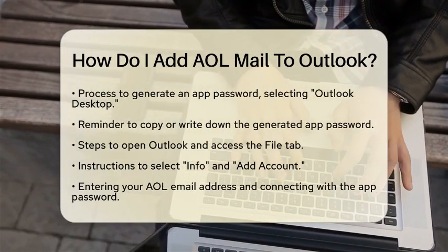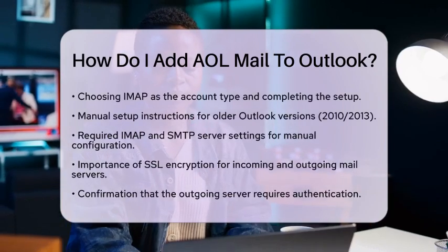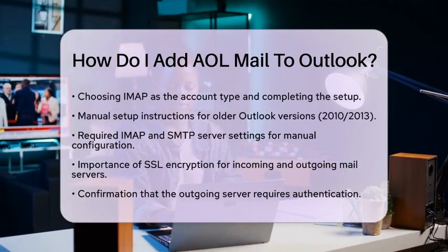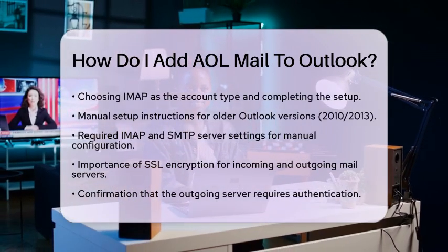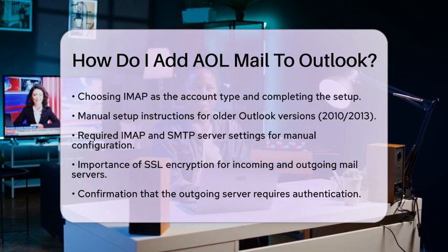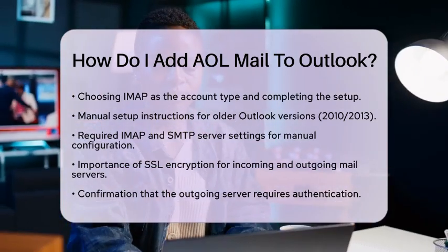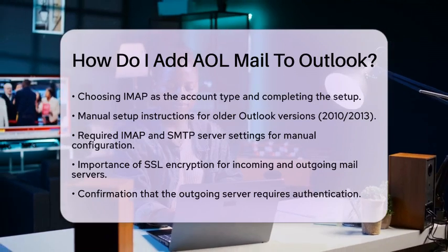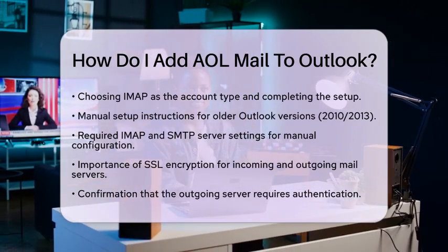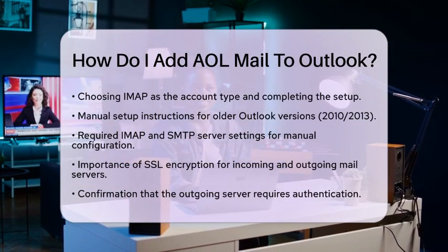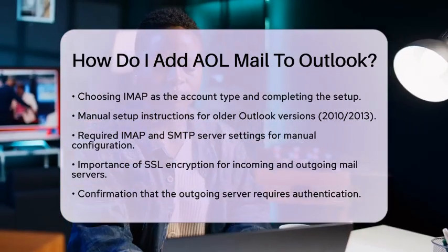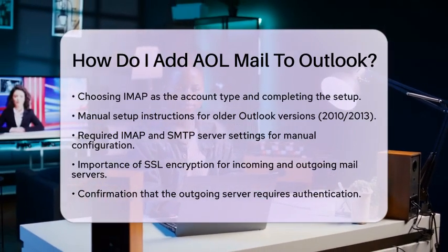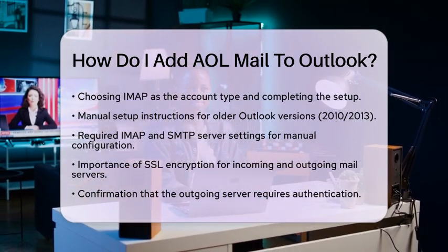If you are using an older version of Outlook, such as Outlook 2013 or 2010, you may need to set up your account manually. In this case, select Manual Setup or Additional Server Types and choose IMAP. For the incoming mail server, use imap.aol.com and set the incoming port to 993 with SSL encryption. For the outgoing mail server, use smtp.aol.com and set the outgoing port to 465 with SSL encryption. Ensure that the outgoing server requires authentication.